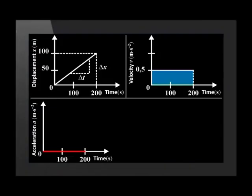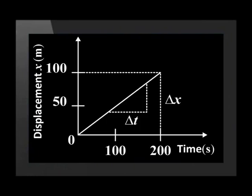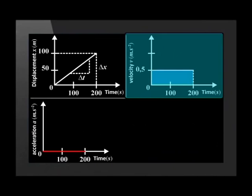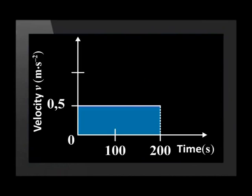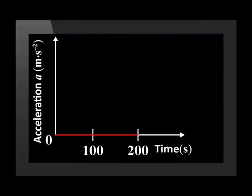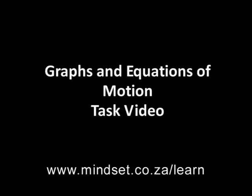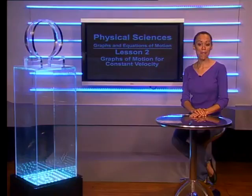To summarise, look at these three graphs of constant velocity. The displacement versus time graph is always a straight line, and the gradient gives us the velocity. The velocity versus time graph is a straight horizontal line, and the area under the velocity-time graph gives us the displacement. Finally, acceleration is 0. You'll find more information about graphs of motion at www.mindset.co.za. Remember to try some of the questions in the task video too. Bye-bye.